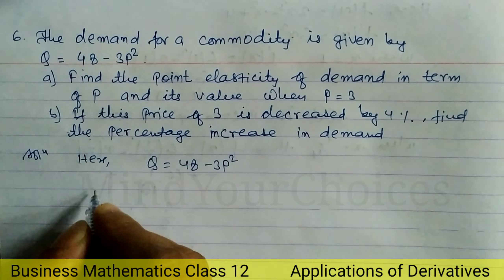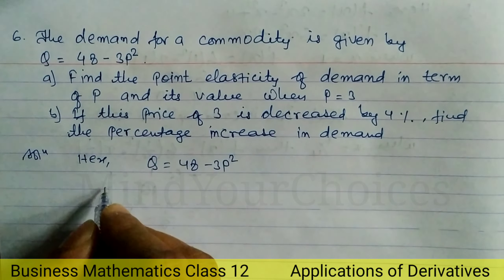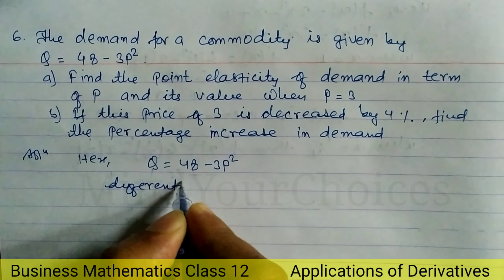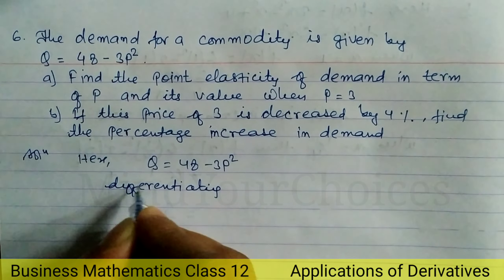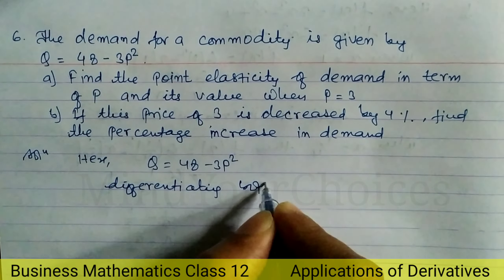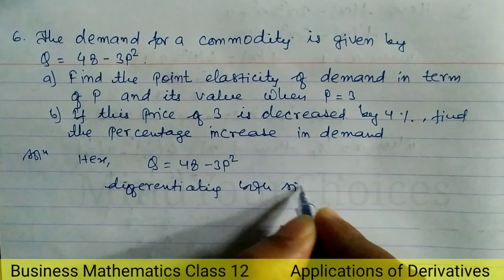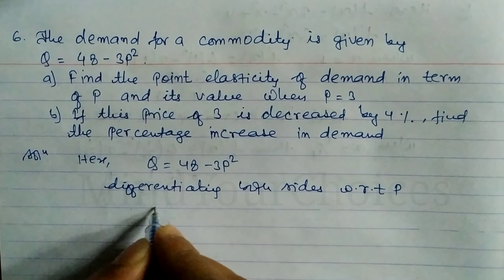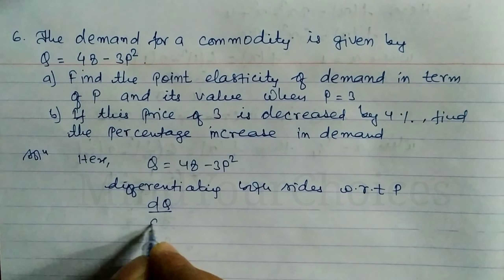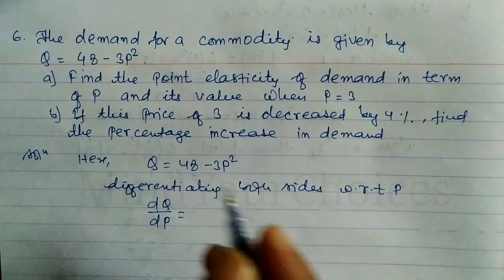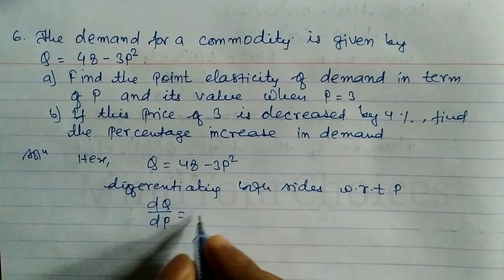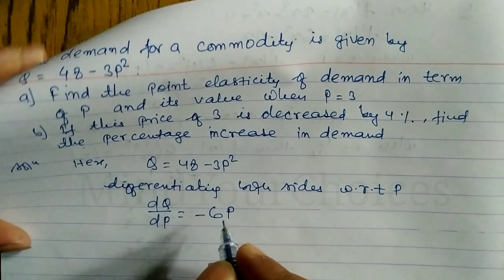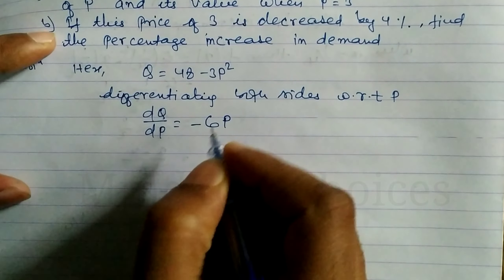Now differentiating both sides with respect to p: dQ/dp — the derivative of 48 is 0, and then the derivative of -3p² is -6p.